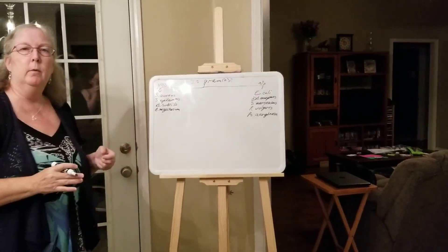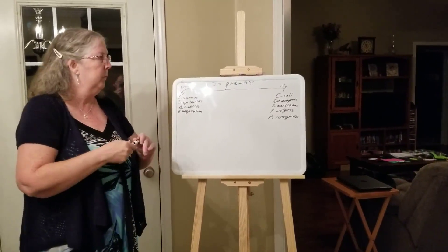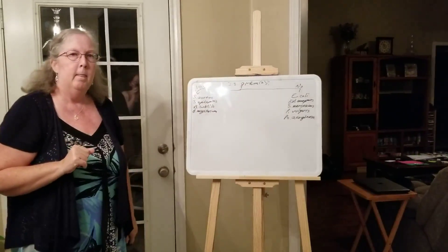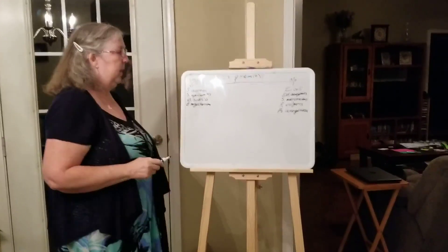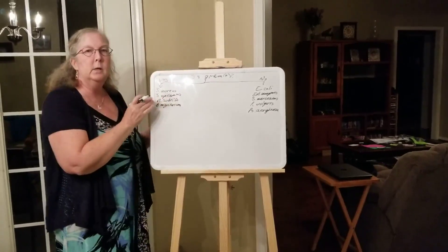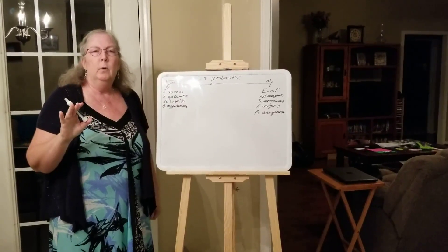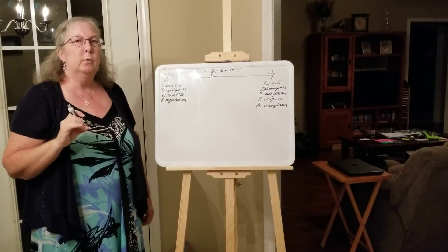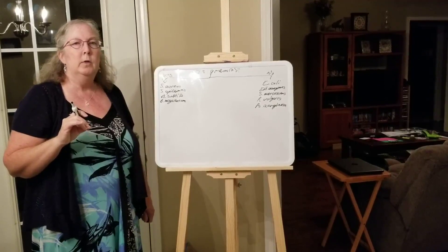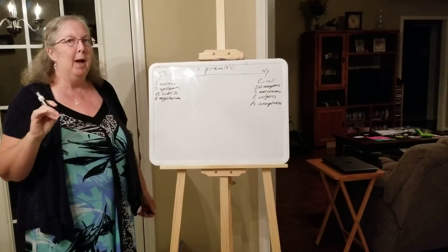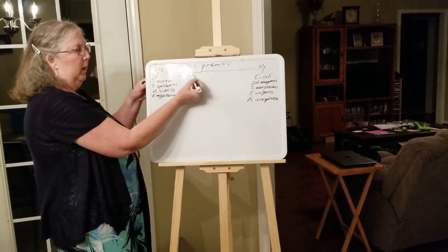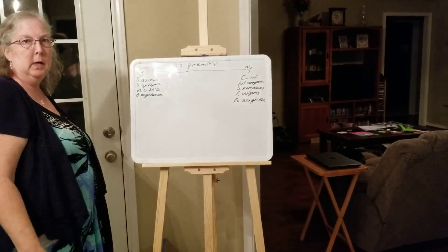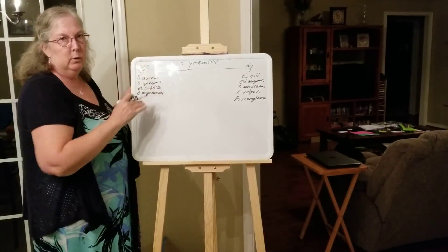So when you set up your dichotomous key, some people will start with gram-positive versus gram-negative, making two separate keys. Now, you're going to look at the gram stain picture, and if it's purple, that means it's gram-positive — come down that path on the flowchart and ignore the gram-negatives entirely. They're out the door; don't even think about those. Stick with the gram-positives, because that's what your initial test results showed.